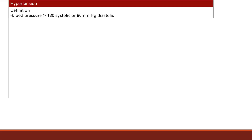Hypertension is one of the most common diseases you'll ever see, especially now that they've lowered the definition to 130 systolic or 80 diastolic. If you get above those numbers multiple times, you're defined as having hypertension.